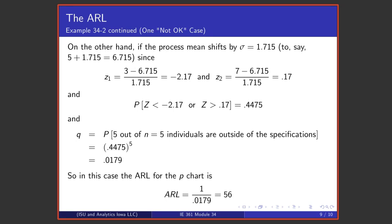On the other hand, if one takes this mean to shift by the process standard deviation of 1.715, that makes the mean 6.715. And that means that for a measurement to be non-conforming, we have values lower than a z value of minus 2.17 or bigger than a z value of 0.17. And that normal probability is 0.4475. If you then take 0.4475 and raise it to the fifth power, you get the probability that all 5 out of 5 individuals are outside the specifications. That number is 0.0179 and the reciprocal of that is about 56.